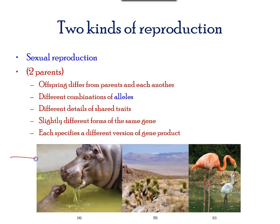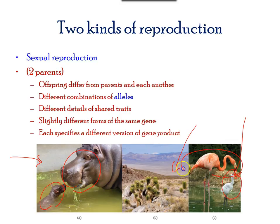As seen from this image, all multicellular organisms begin their life after fertilization. Each kind of organism produces offspring of the same kind. However, the offspring differ from parents and siblings in appearances.